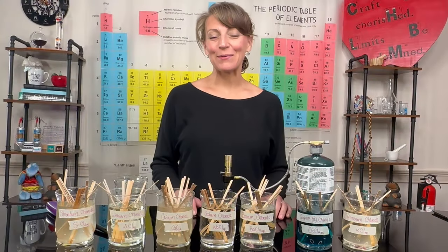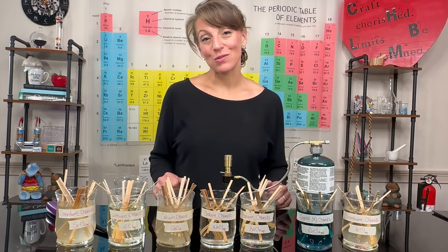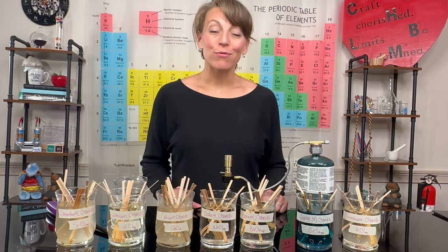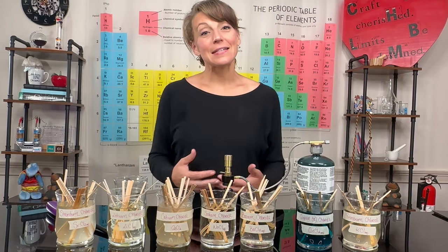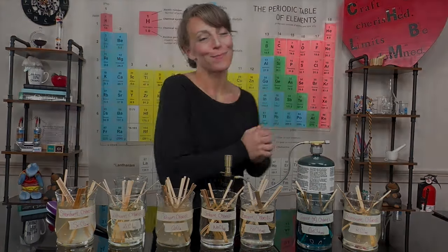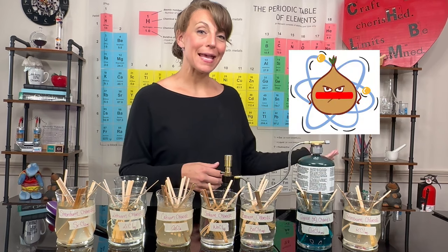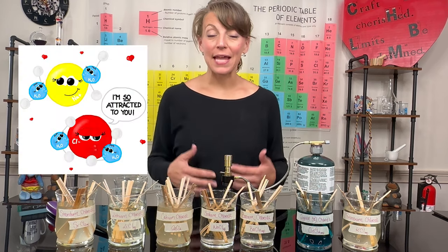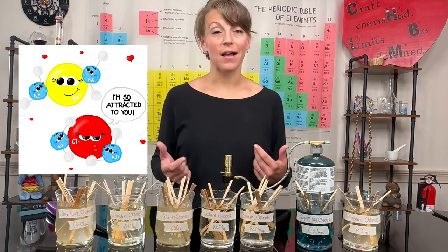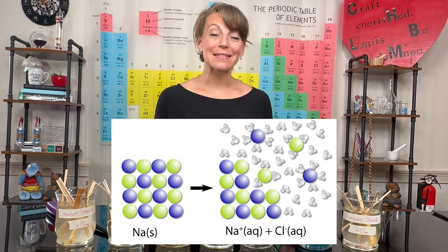For this experiment we're going to utilize aqueous solutions of ionic compounds. An ionic compound, also known as a salt, is a species comprised of a metal from the left side of your periodic table paired with a nonmetal from the right side. Metals tend to form cations or positive ions, and nonmetals tend to form anions or negative ions. When a cation and an anion interact, they form an electrostatic attraction between oppositely charged ions, which is called an ionic bond. When salts or ionic compounds dissolve in water, they dissociate into their ions, which move freely around in solution.